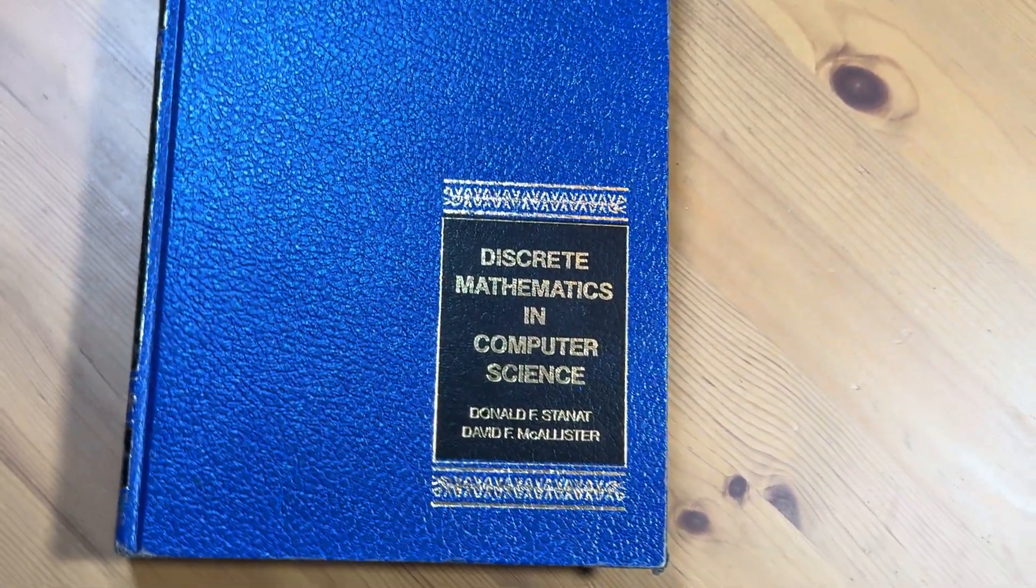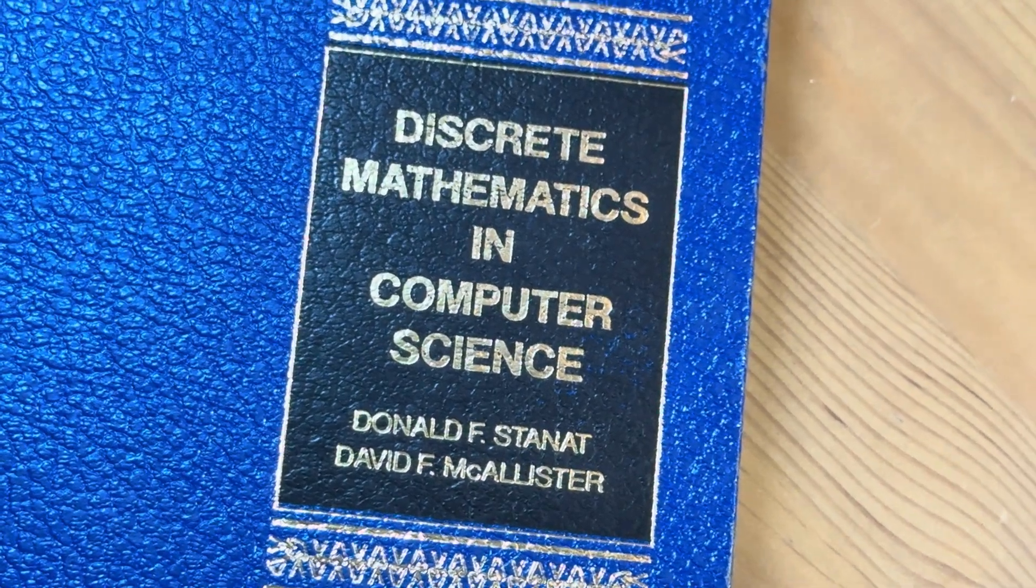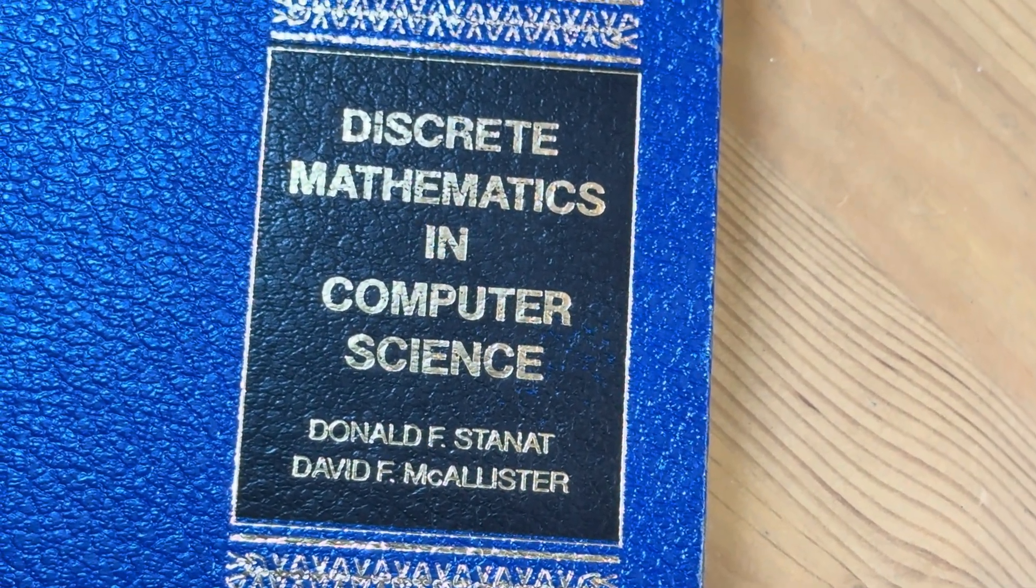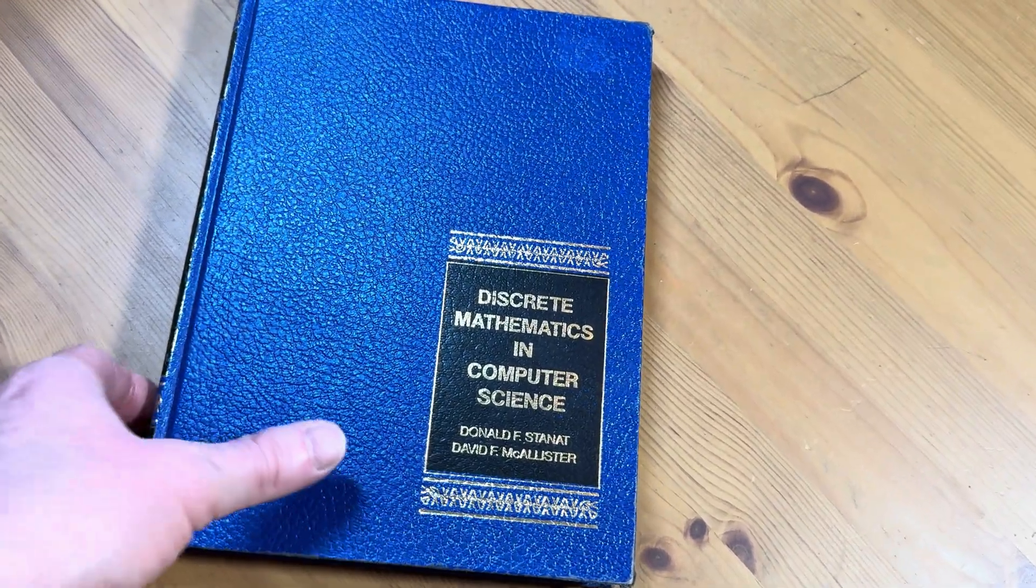Hi, in this short video we're going to take a quick look at this book. It's titled Discrete Mathematics in Computer Science and was written by Donald Stanant and David McAllister. This is an older book on discrete math.